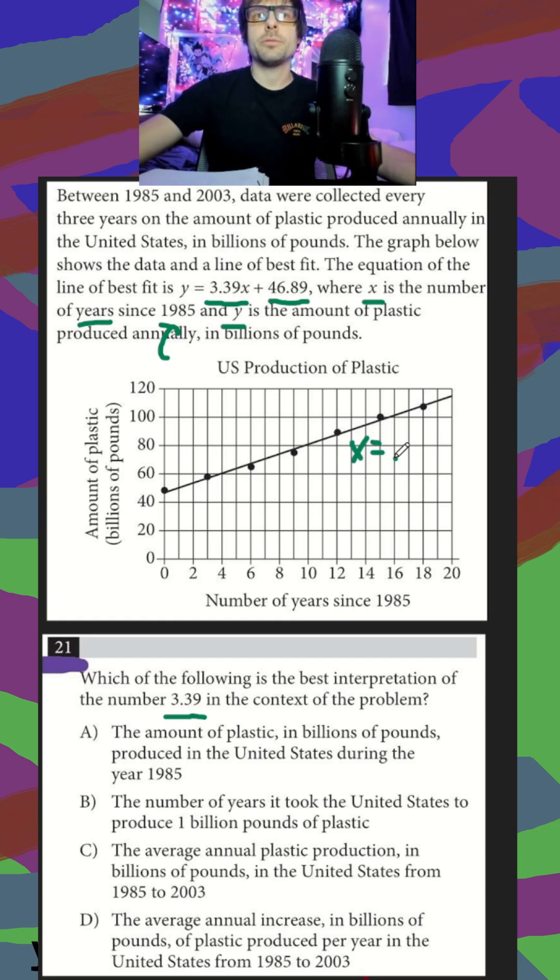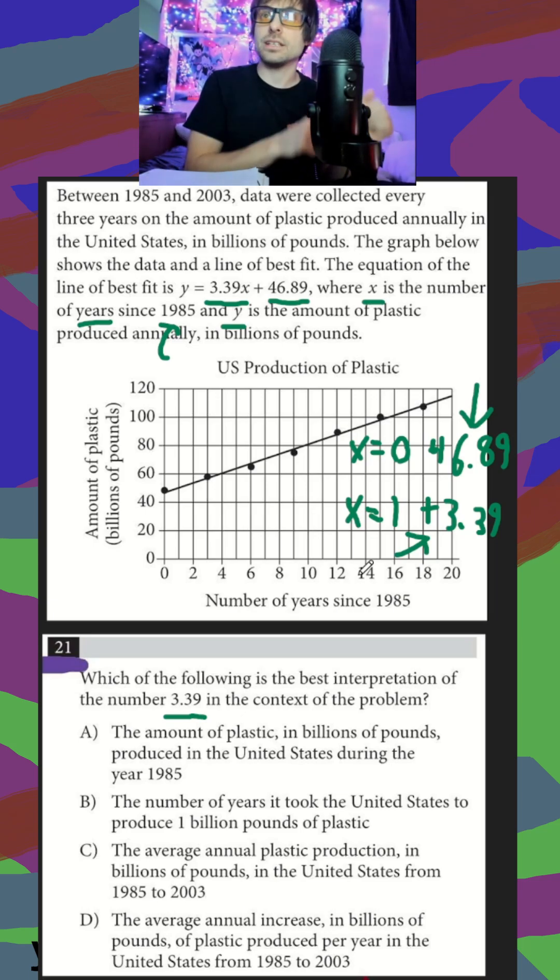When x equals 0, we have 46.89 billions of pounds of plastic produced. When x equals 1, all that's changing for each increase of 1 in x is we're adding an additional 3.39 to our y. So if this is billions of pounds of plastic, we are just adding 3.39 billions of pounds of plastic for each year that passes.